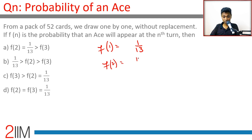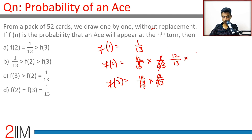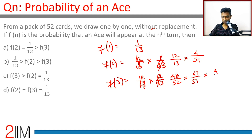f(2): ace should not have appeared in the first turn, so probability is 12/13, into ace appearing in the second turn. Since this is without replacement, f(2) = 48/52 into 4/51. f(3) = 48/52 into 47/51 into 4/50, and so on.